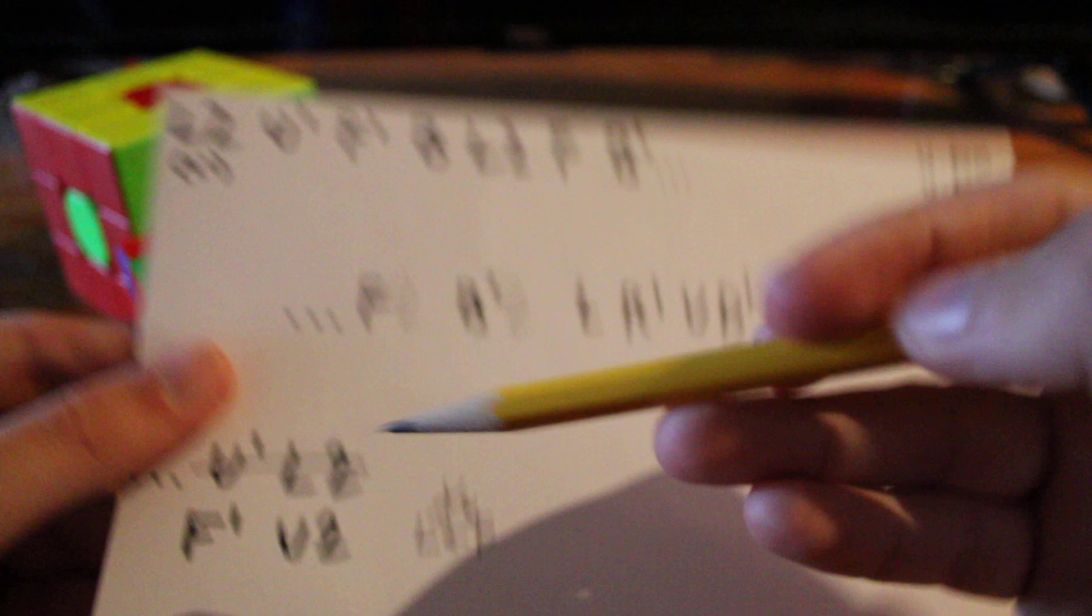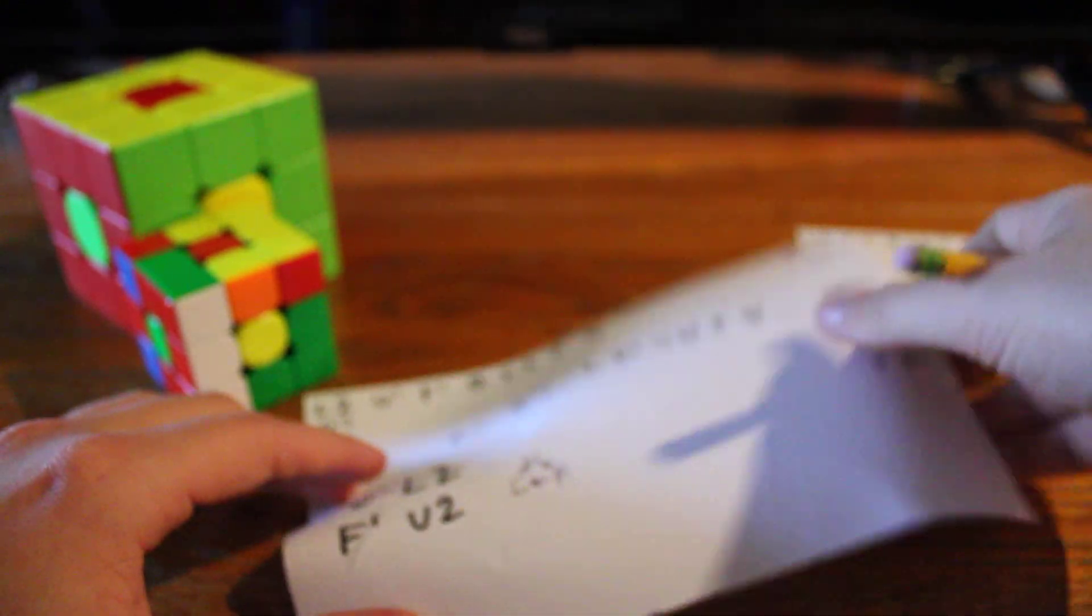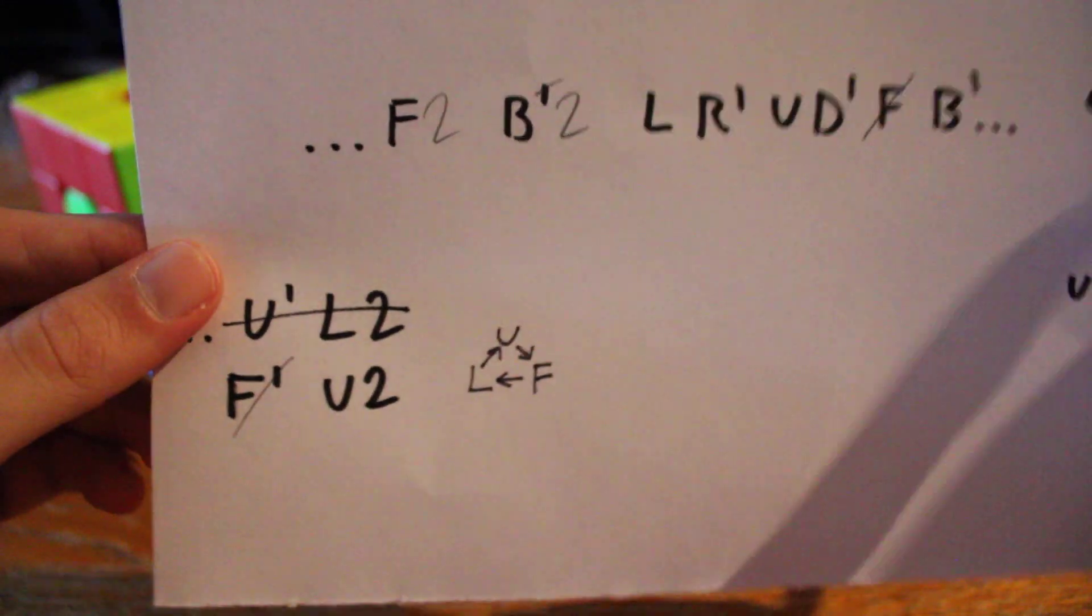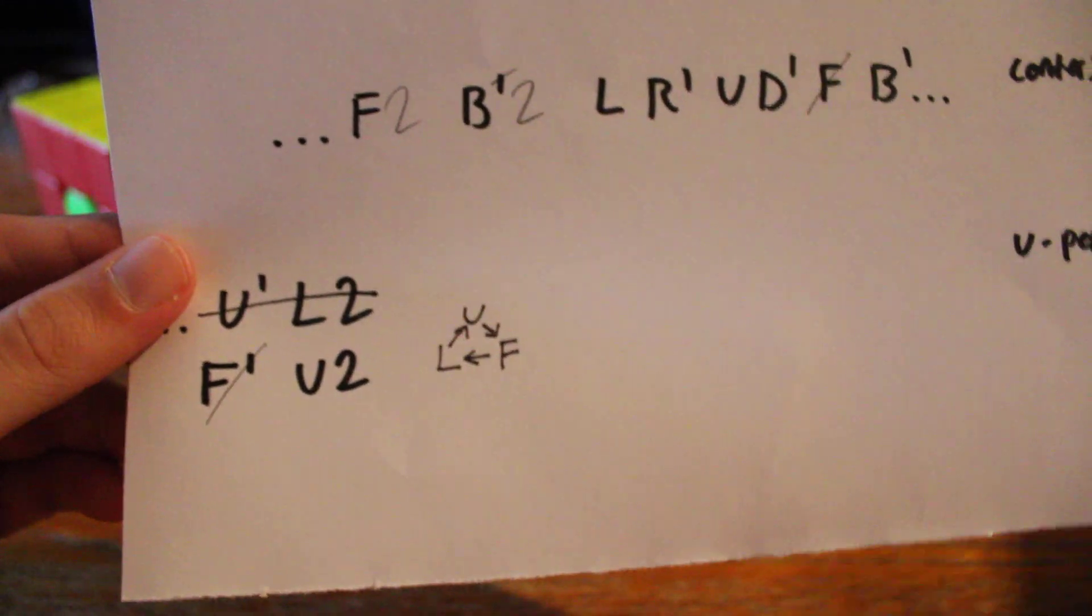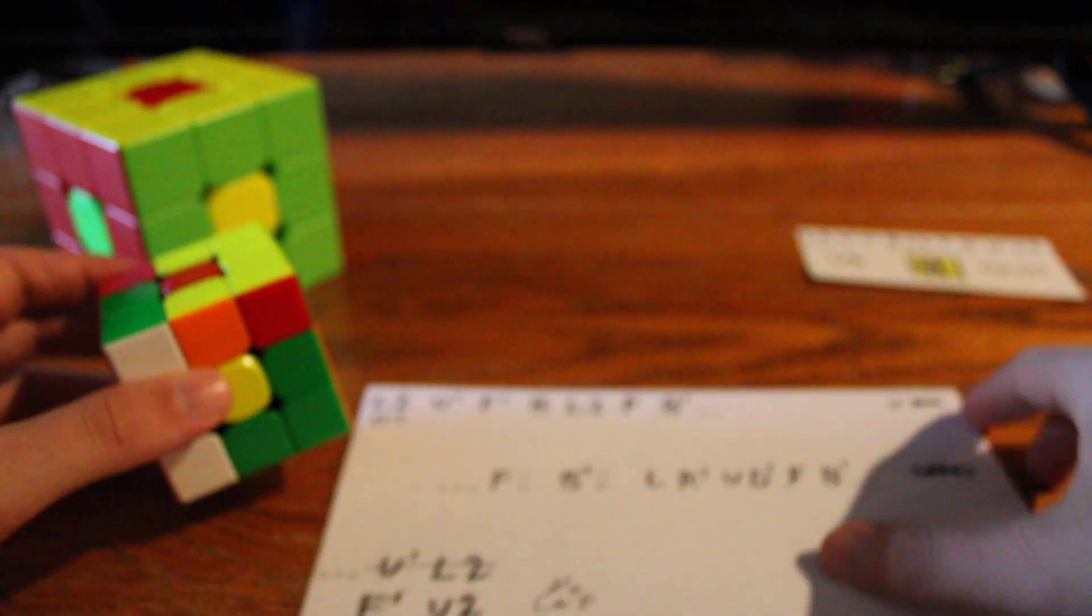And so, then this F' in the U-perm actually cancels with the F in the center permutation algorithm. So, there we go. And then the L2 becomes a U2, of course. And so, let's perform the U-perm and center permutation algorithm at the same time.